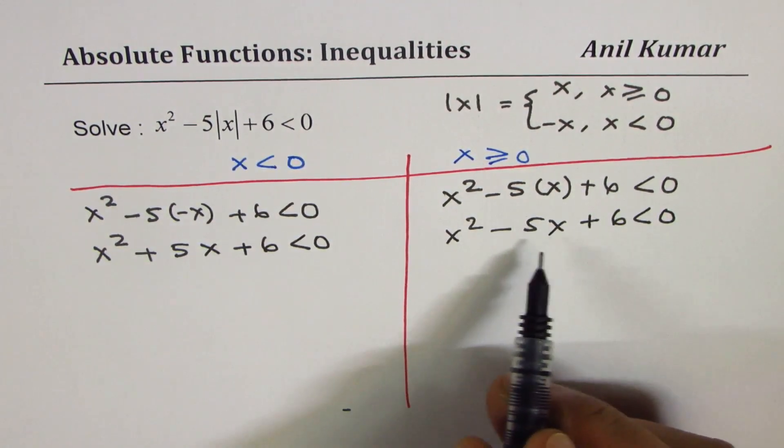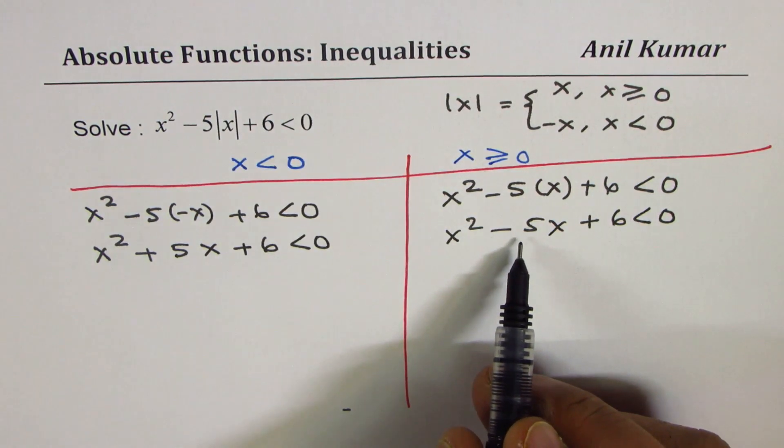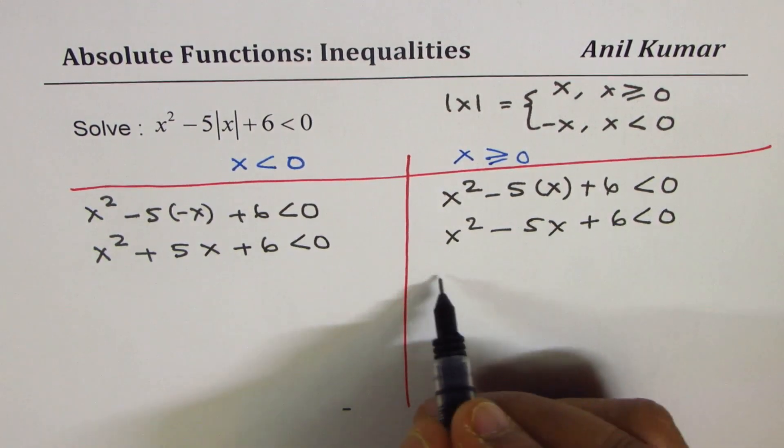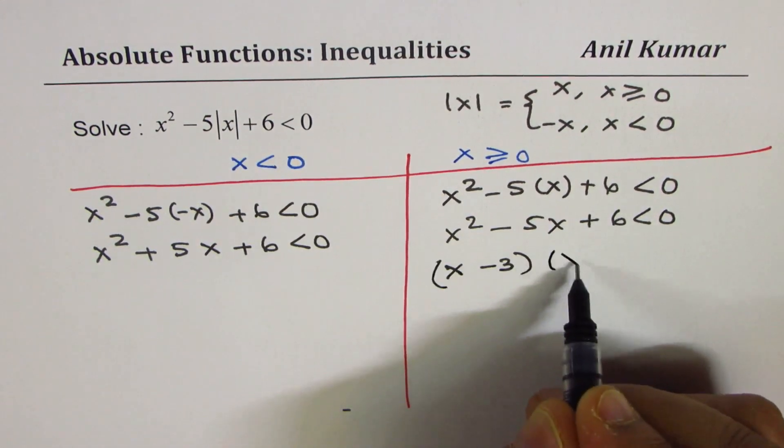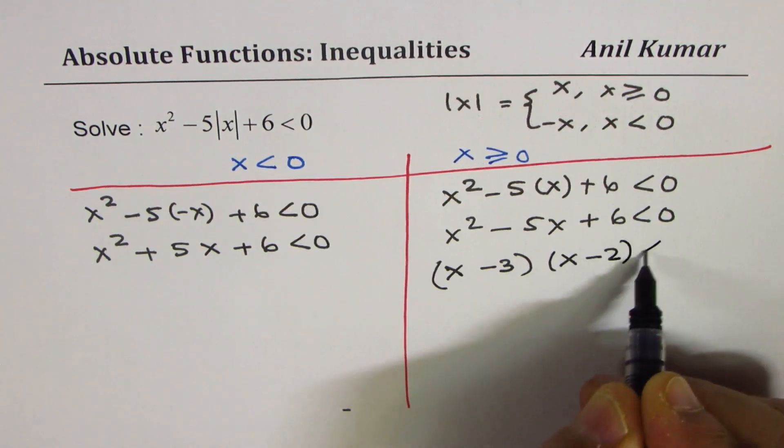This can be factored. We are looking for sum of minus 5, product of 6, both negative. So we could write this as x minus 3 times x minus 2 less than zero.